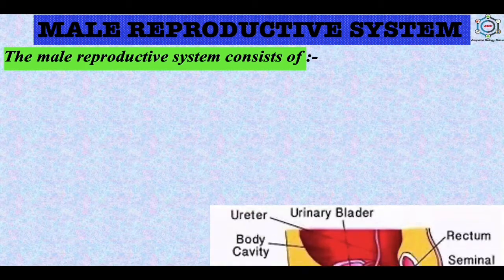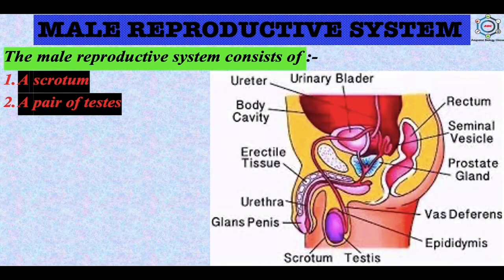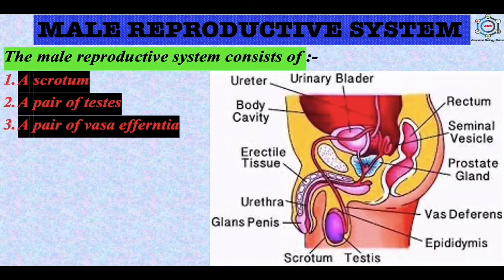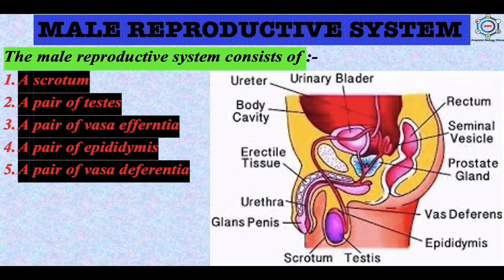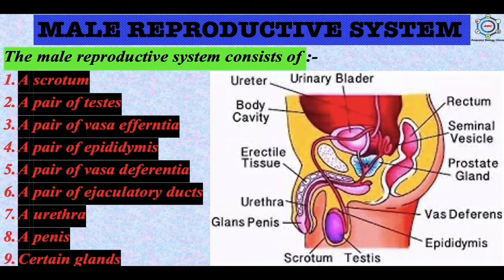Now the main part: the male reproductive system. The male reproductive system consists of a scrotum, a pair of testes, a pair of epididymis, a pair of vas deferens, a pair of ejaculatory ducts, a urethra, a penis and certain glands. These are the male reproductive organs which we will study in detail.